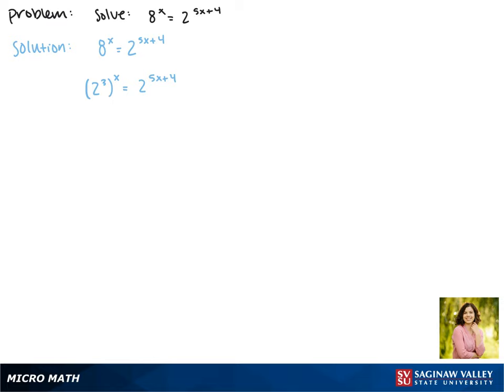Now when we have a power raised to a power, we multiply. So we'll rewrite this as 2 to the 3x equals 2 to the 5x plus 4.